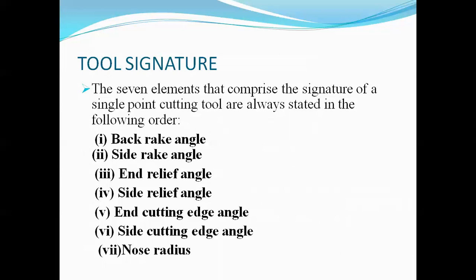The seven elements of the tool signature are: first, back rake angle; second, side rake angle; third, end relief angle; fourth, side relief angle; fifth, end cutting edge angle; sixth, side cutting edge angle; and seventh, nose radius. All play a huge role on the machining performance.